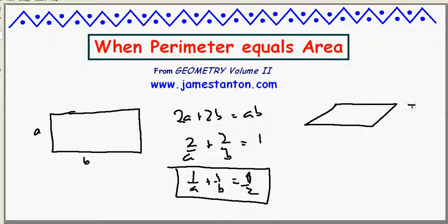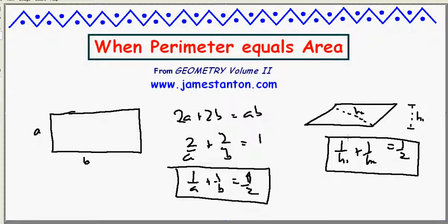If you did this for a parallelogram, now here's what I need you to prove. If you've got one height, you can measure this way, height 1. If you've got another height, you can measure this way, height 2. Prove that its area equals its perimeter when those heights have the same property: 1 over H1 plus 1 over H2 equals 1 half.